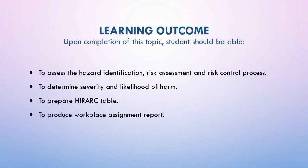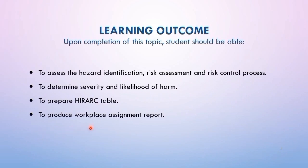These are the learning outcomes for Chapter 2. There are four learning outcomes: assess the hazard identification, risk assessment, and risk control process to determine the severity and likelihood of harm; to prepare the hierarchy table; and to produce the workplace assignment report.